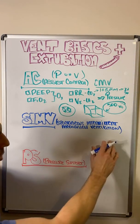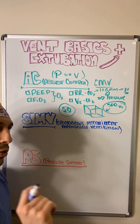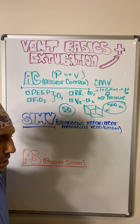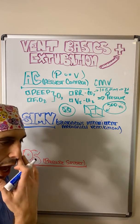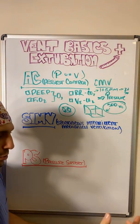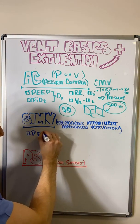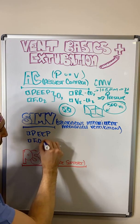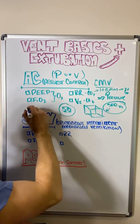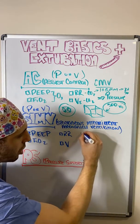SIMV mode is very similar to assist control. Some places don't use it much, predominantly because it was thought it would help liberate people from the ventilator but actually doesn't, and it tends not to be that useful. It was meant to be more comfortable for patients as opposed to assist control. Again, we program in PEEP, FiO2, respiratory rate, and in this case for the example I'll use volume.